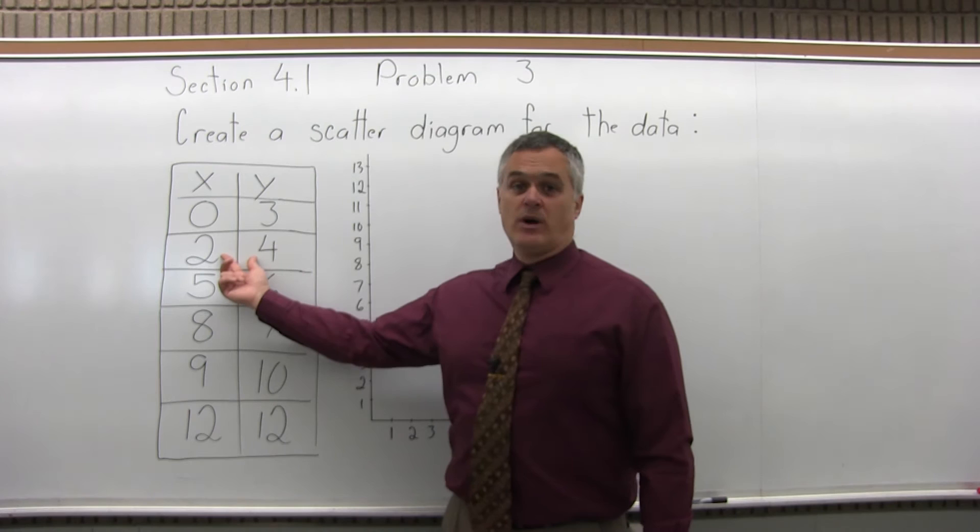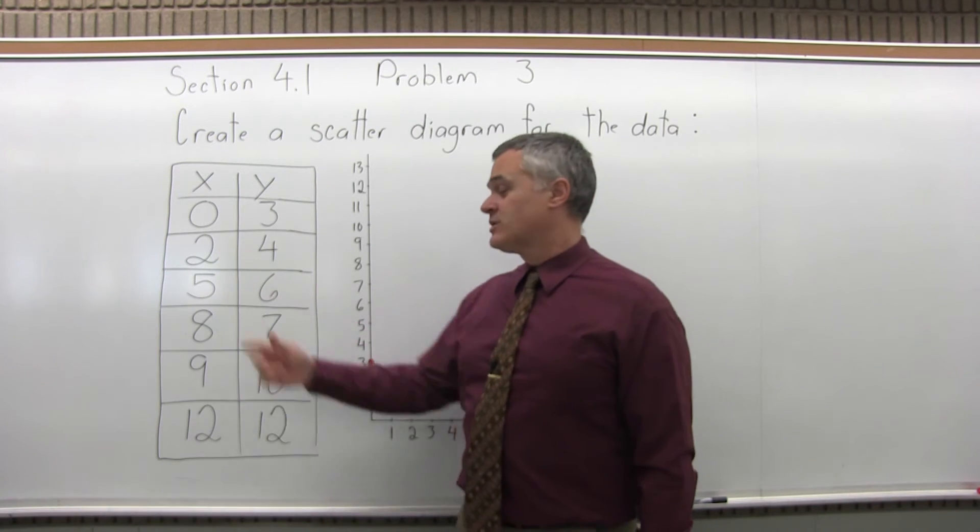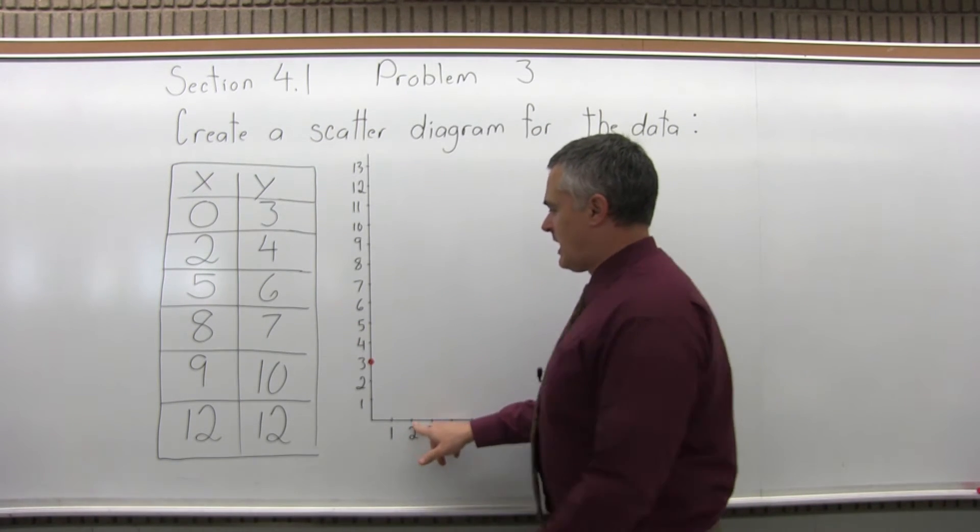The second point is 2, 4. So 2 for x, 4 for y. So over 2, up 4.